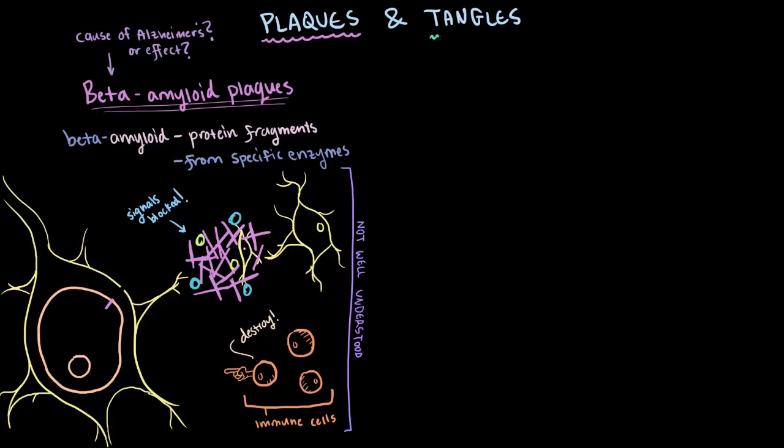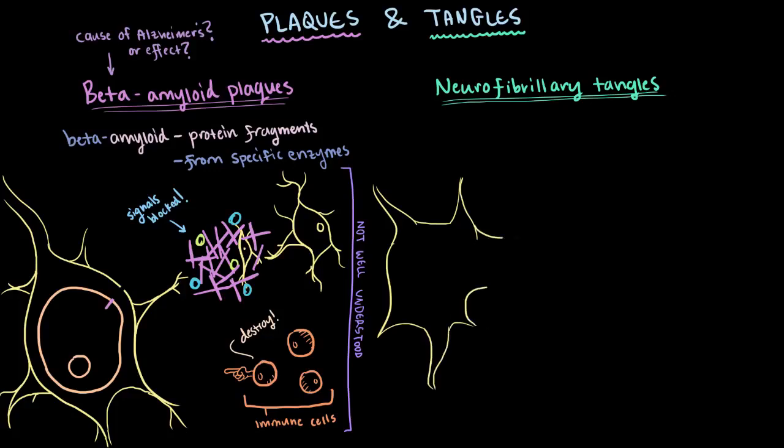So those are the plaques, now let's talk about these tangles. Another more fancy name you might hear is neurofibrillary tangles. These, unlike the beta-amyloid plaques, actually show up inside the neurons.